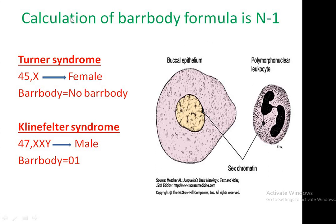How can we calculate the Barr body number? As an example, in case of Turner syndrome there are 45 chromosomes and one X chromosome is absent. The Barr body number is 0 because using the n-1 formula, n equals 1 X chromosome in Turner syndrome, and 1 minus 1 equals 0.